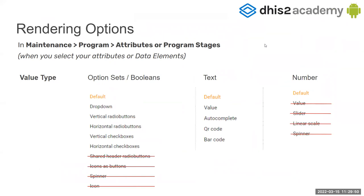For rendering options, you can go to Maintenance, then to the program, and you can go to the program status or the attributes. When you select your attributes or the data elements, for the different value types you will be able to select different rendering options. As we said, for option sets or booleans you can use vertical radio buttons or horizontal radio buttons. The ones with a red line are not supported right now — maybe in the future. For the text type, you can use a value field, autocomplete, QR codes, and barcodes. There is no rendering option for numbers right now.